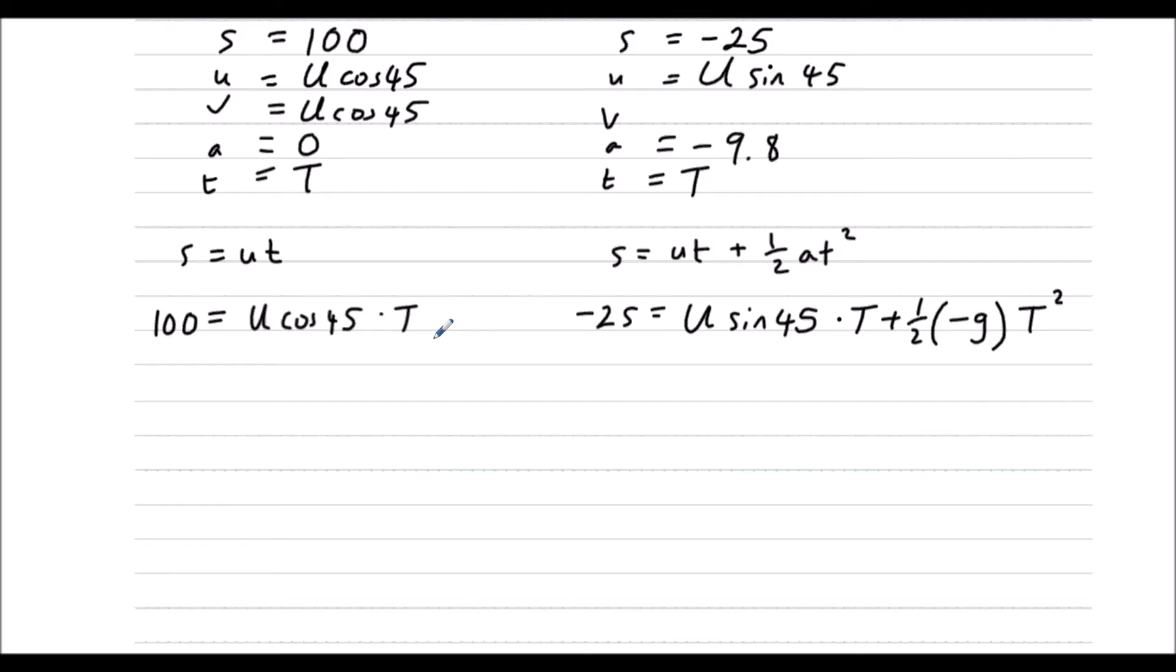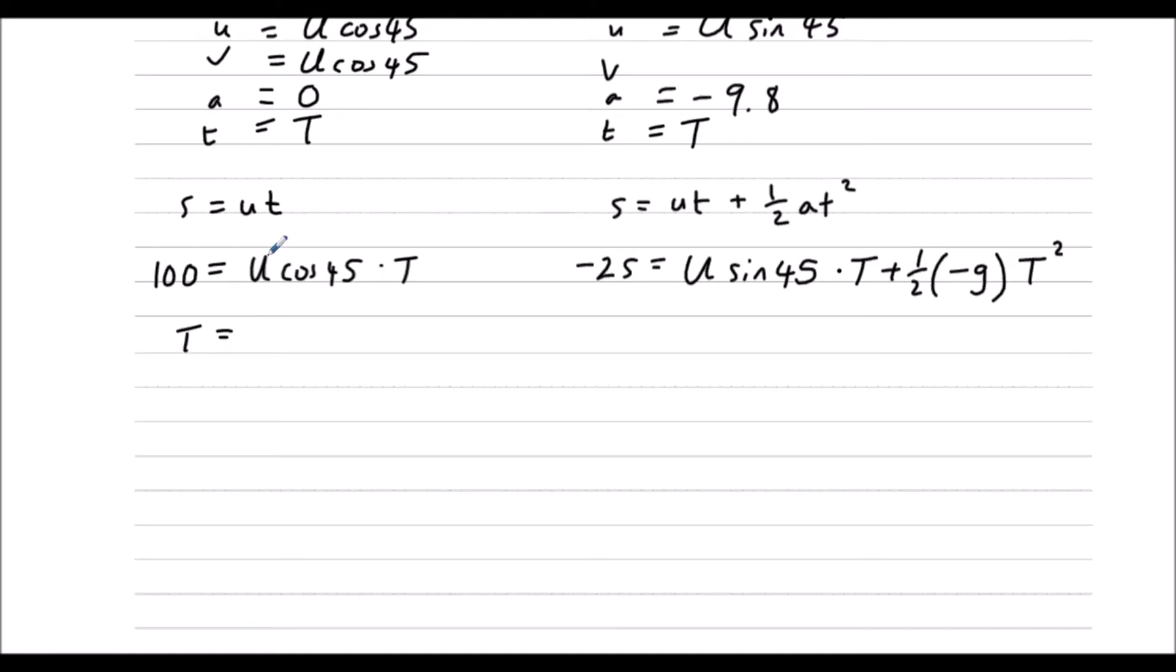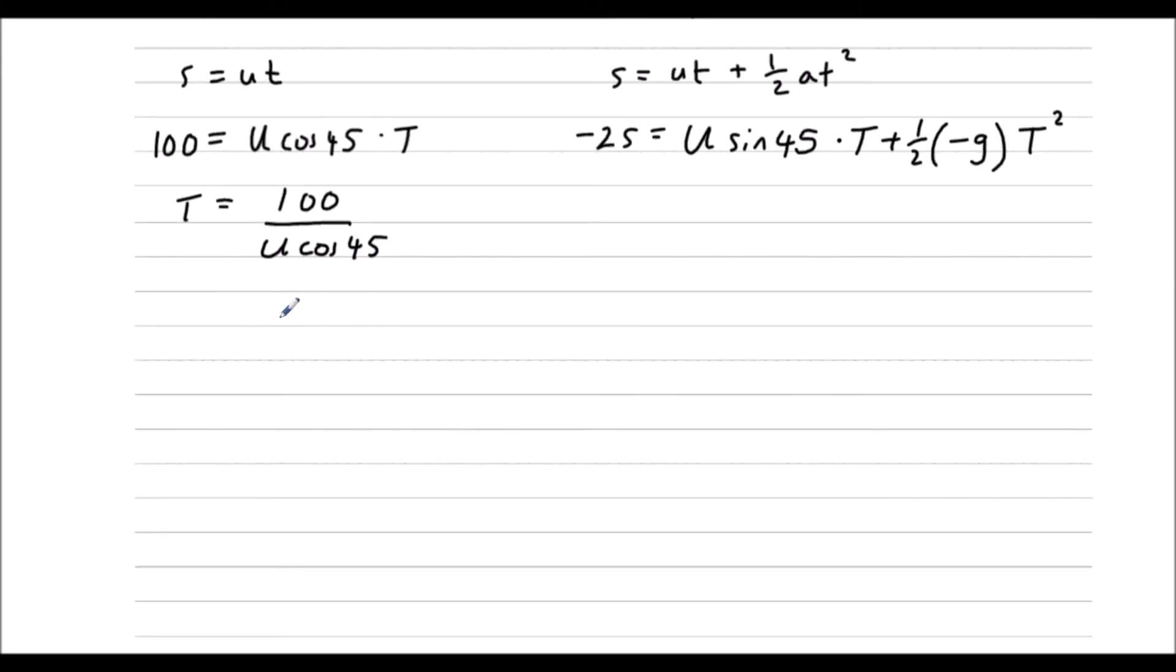So let's eliminate T. Let's write T equals, divide both sides by u cos 45, so 100 over u cos 45. So we've got minus 25 is U sin 45 times T, which is 100 over u cos 45. Now cos 45 and sin 45 are the same. They are going to cancel out, plus half times negative G times T squared, so 100 over u cos 45 squared. So u sin 45 and u cos 45 cancel out. They're the same number.